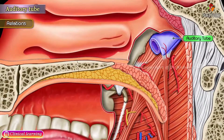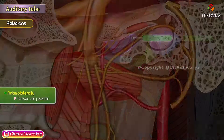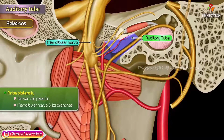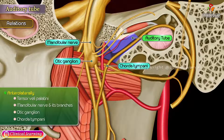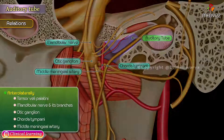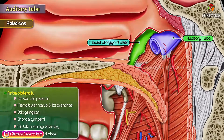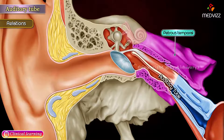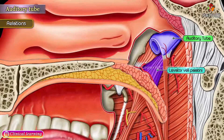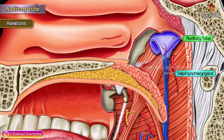Relations of the cartilaginous part: Anterolaterally — tensor veli palatini, mandibular nerve and its branches, otic ganglion, chorda tympani, middle meningeal artery, and medial pterygoid plate. Posteromedially — petrous temporal and levator veli palatini. The levator veli palatini is attached to its inferior surface, and the salpingopharyngeus to its lower part near the pharyngeal opening.